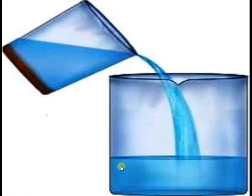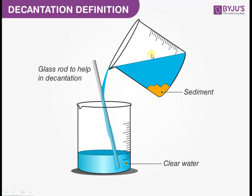After sedimentation, the tumbler is gently lifted. The tip of the tumbler is inclined on the edge of another tumbler without disturbing the sediments. The water gets separated from the sediment. This process is called decantation.